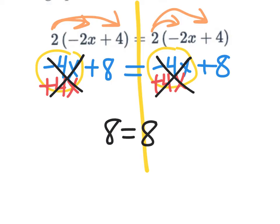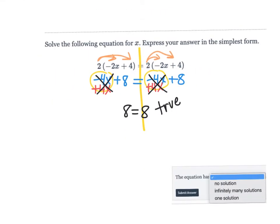Does 8 equal 8? Well, yes. That's a true statement. 8 does equal 8. And our variable has disappeared. We have no variable. So what is our solution then? If they're twins, it's infinitely many solutions.